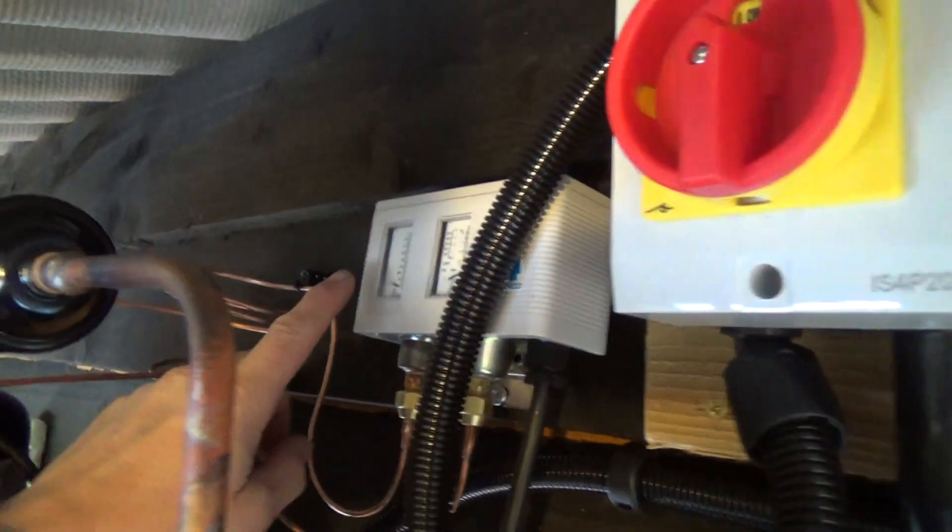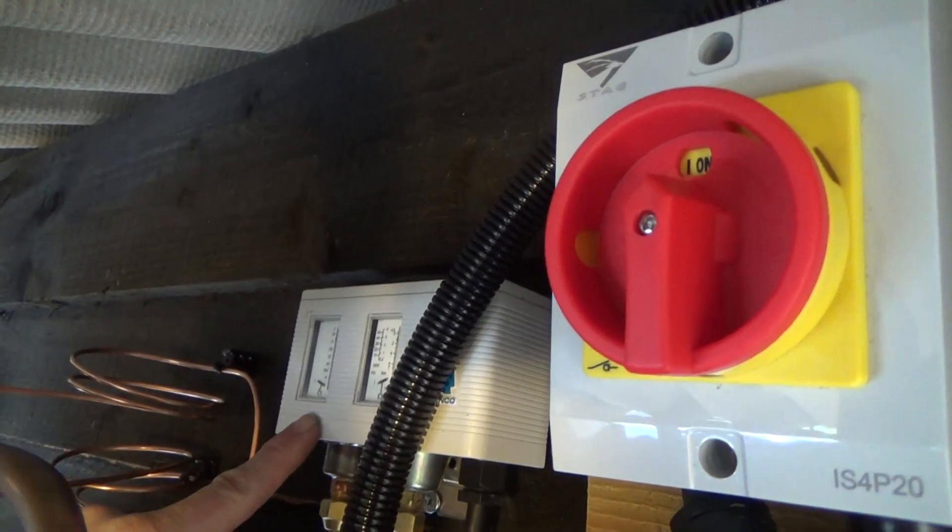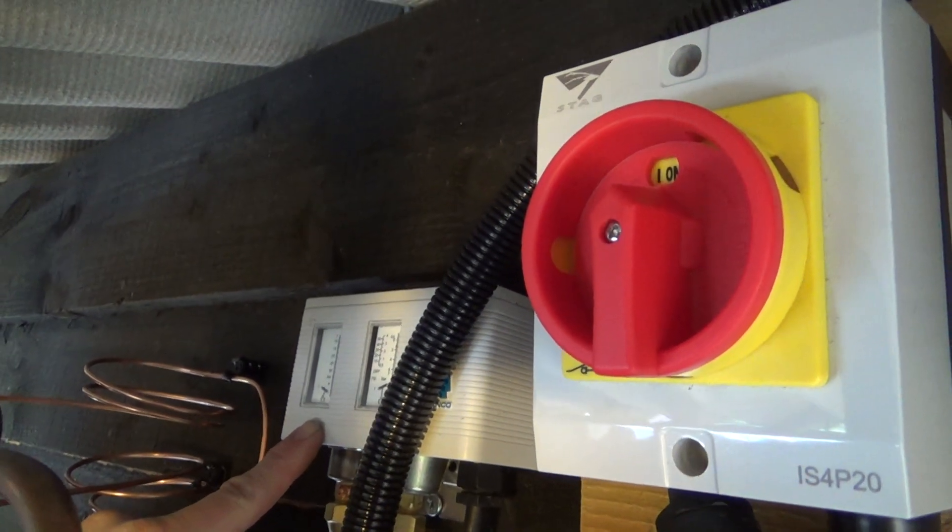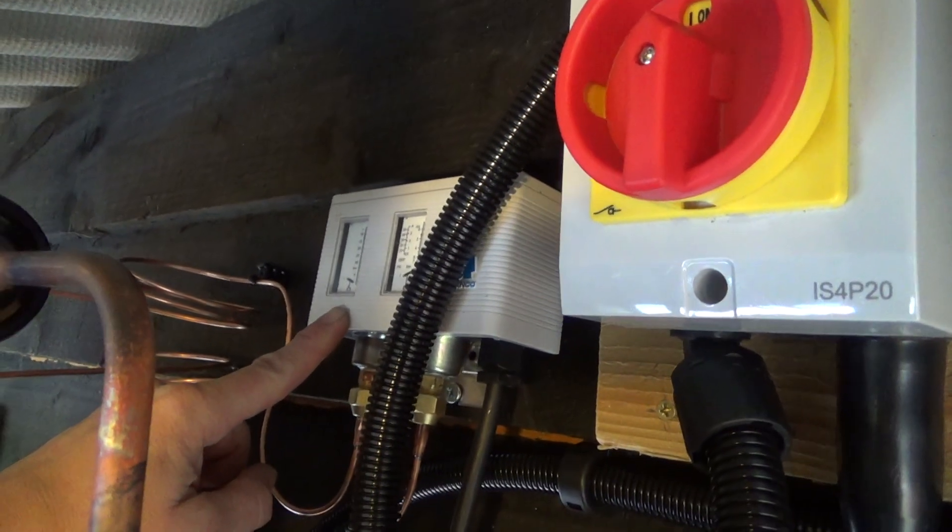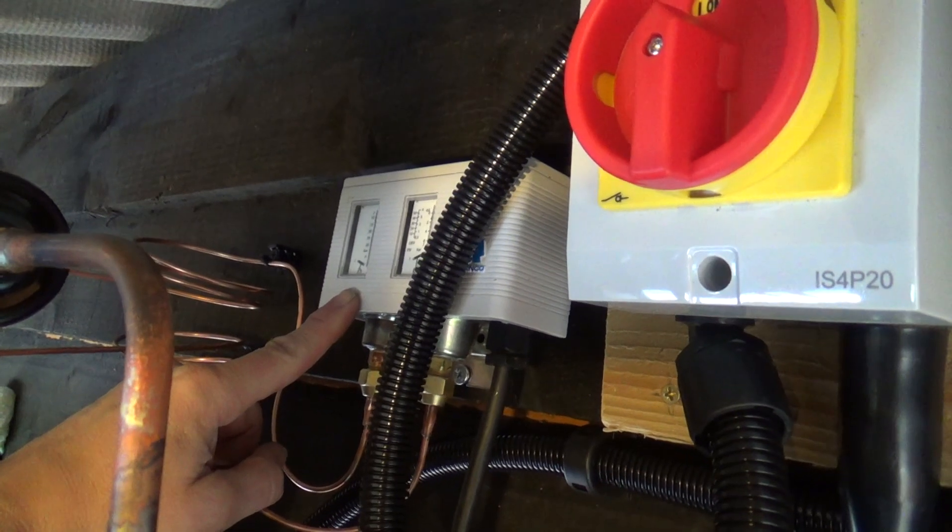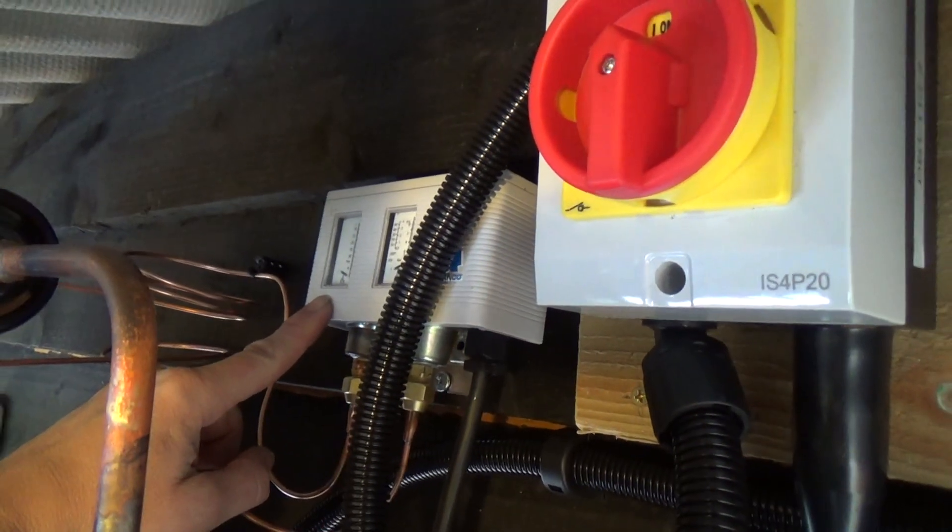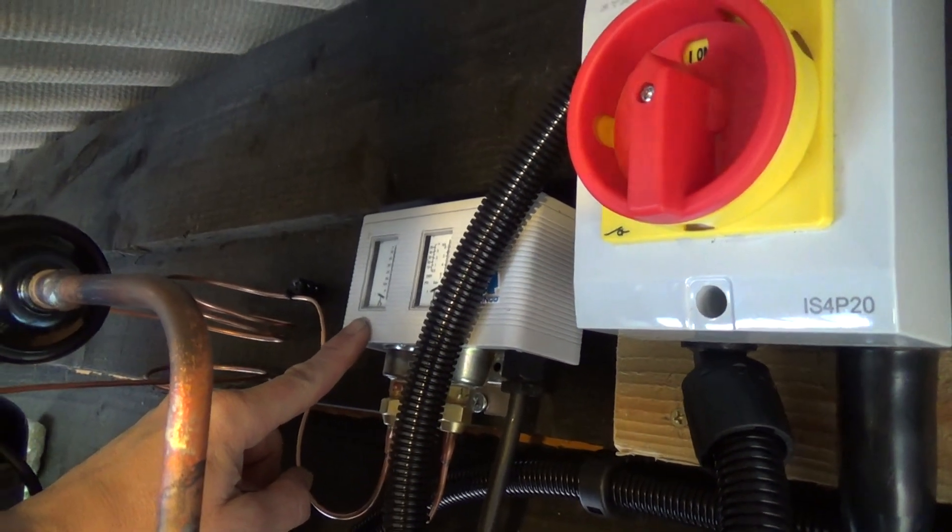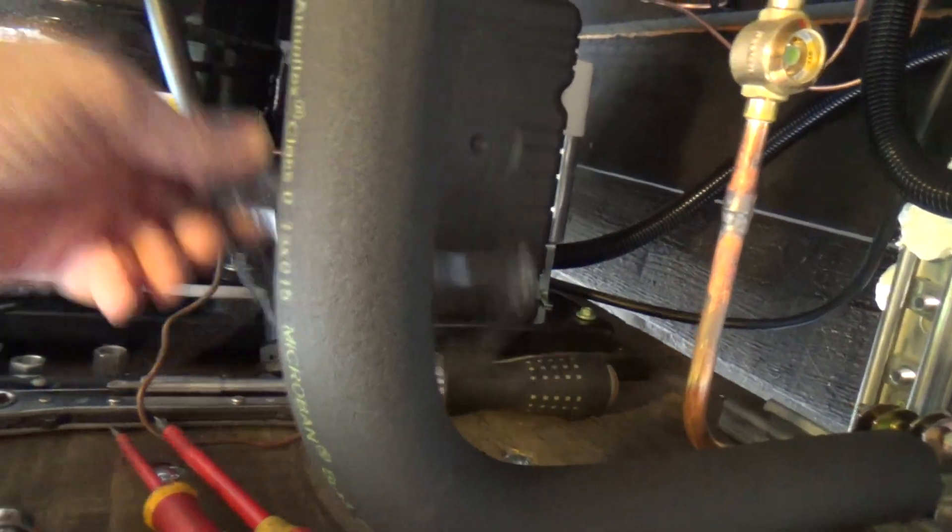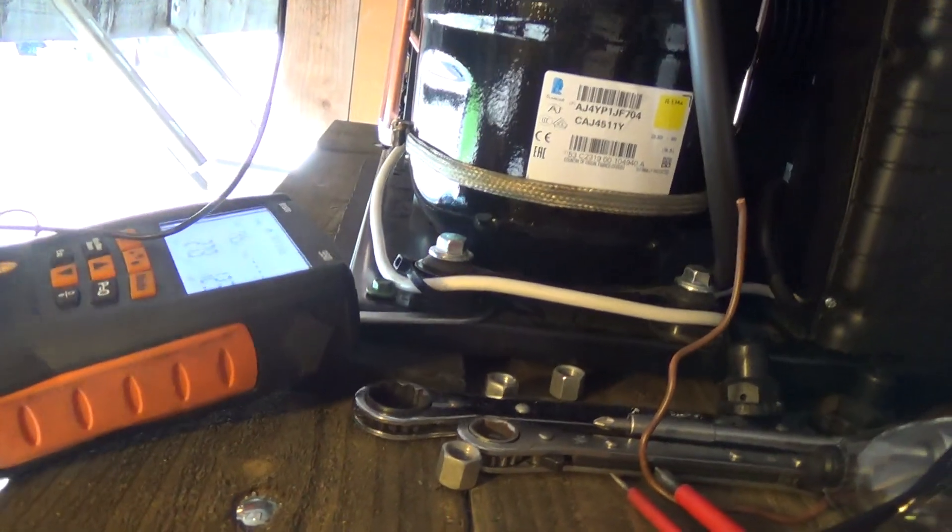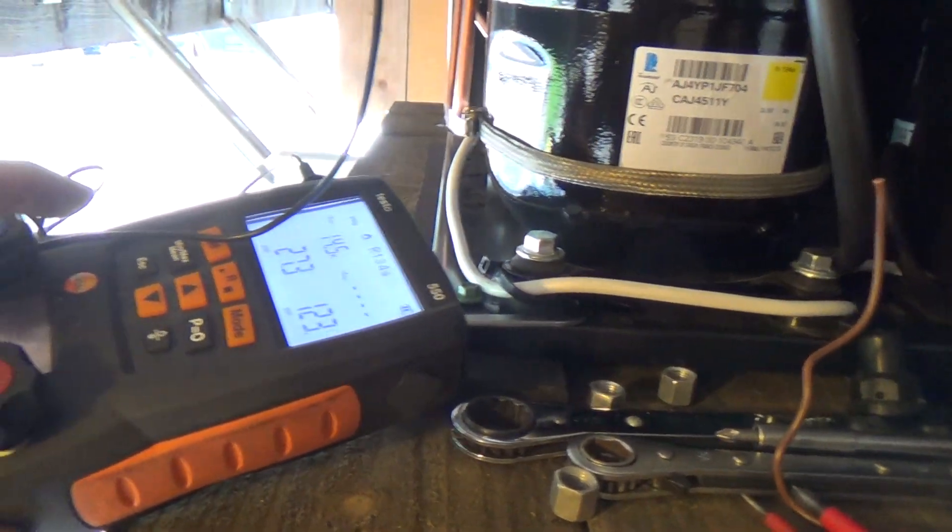Now we've got this set high side to trip about 55 degrees C condensing temp. Hopefully it shouldn't get that hot up here. If you set them too high they can sort of kill themselves with a dirty condenser running at 60 odd for ages before anyone notices.